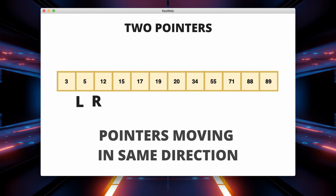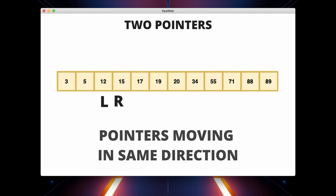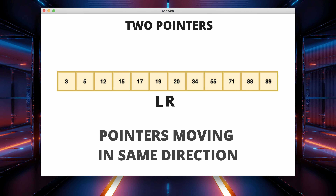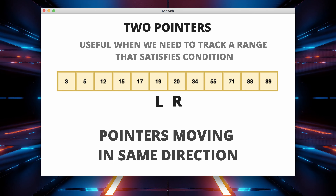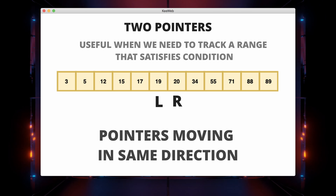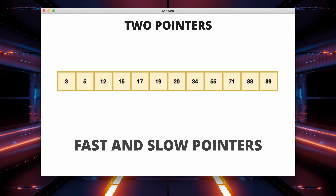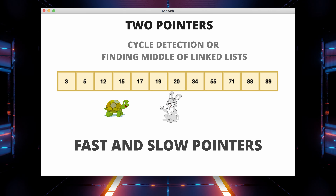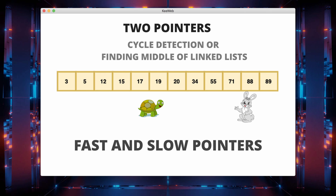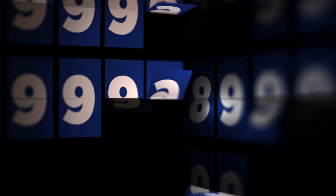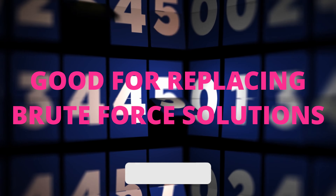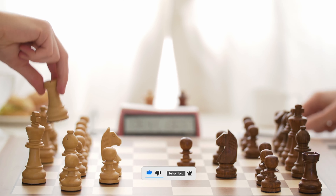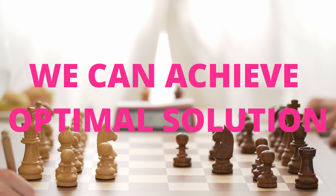The second scenario is two pointers moving in the same direction: initialize two pointers at the beginning of the array and move both pointers in the same direction, maintaining a certain condition. This approach is useful when you need to track a range or window in the array that satisfies a particular condition. The last scenario is fast and slow pointers, where we use two pointers — one moving faster than the other. This is commonly used for tasks like detecting cycles in linked lists or finding the middle of a linked list. The two pointers pattern is especially effective where brute force solutions would be too slow, allowing you to achieve a more optimal solution.